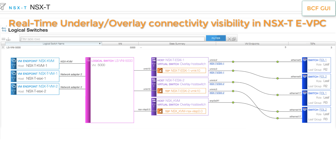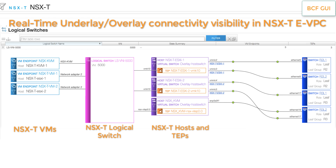The logical switch view provides real-time underlay and overlay connectivity visibility in a single graphical view, making it very easy to trace the end-to-end path for NSX-T VMs. You can see all the NSX-T VMs, the NSX-T logical switches they connect to, the transport nodes and TAPs, and how the host uplinks are connected to the BCF.